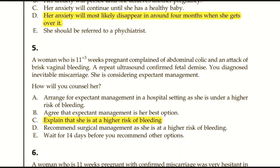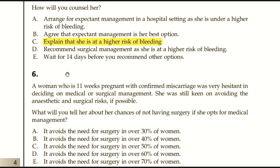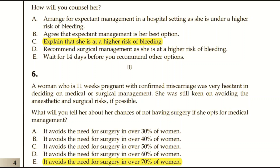Question number six: A woman with a confirmed miscarriage is hesitant between medical and surgical management and keen to avoid anaesthetic and surgical risk. What are the chances of avoiding surgery with medical management? Options: avoids surgery in 30%, over 50% at 40%, over 50%, or over 70% of women. The evidence shows that medical management avoids the need for surgery in over 70% of women. The answer is E.